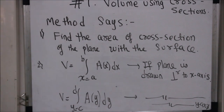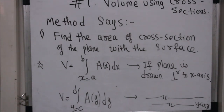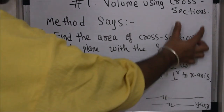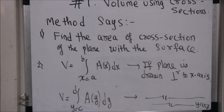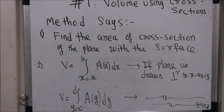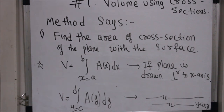We will see how single integration helps us to find volumes. There are double and triple integration methods to find volumes, but many times even single integration helps us when we only know the cross sections. In this video, I am not going to prove this formula — it requires Riemann sums — but my goal is to do around five to six examples so that you can solve problems using this method.